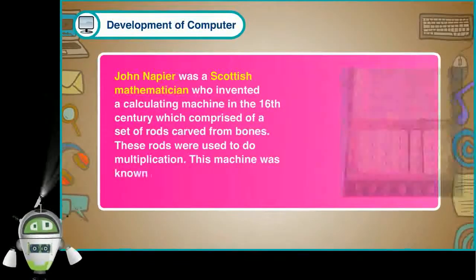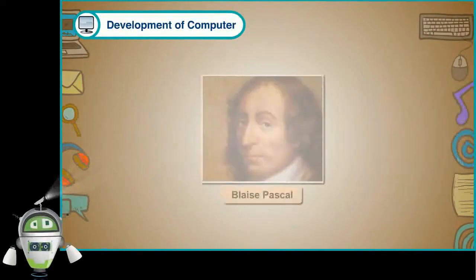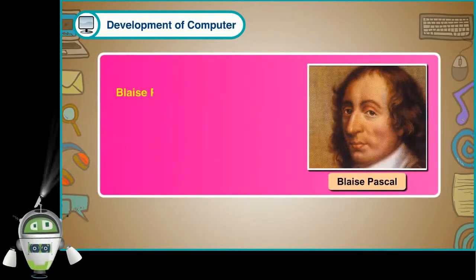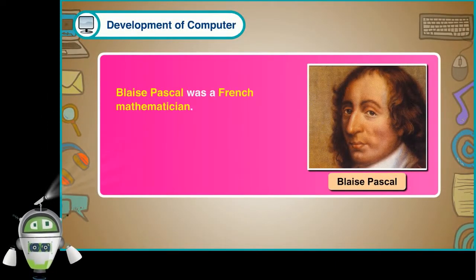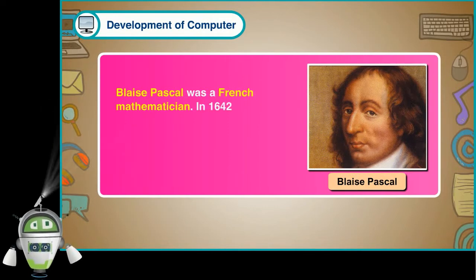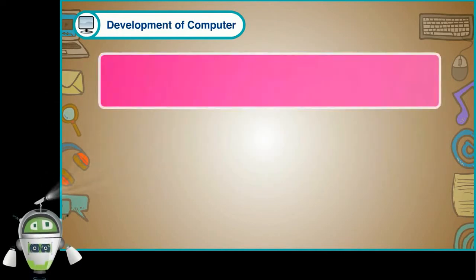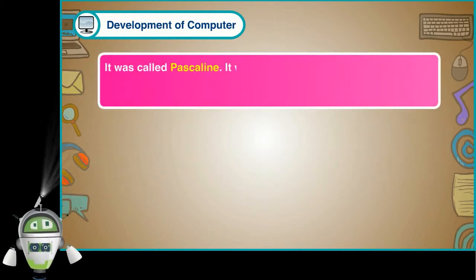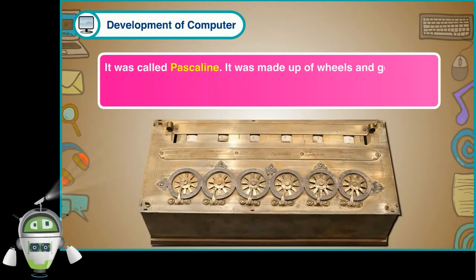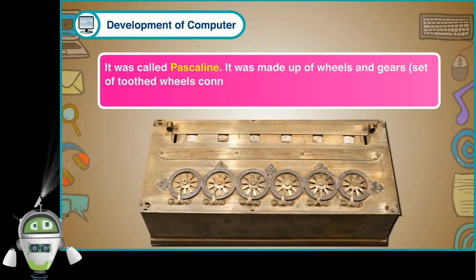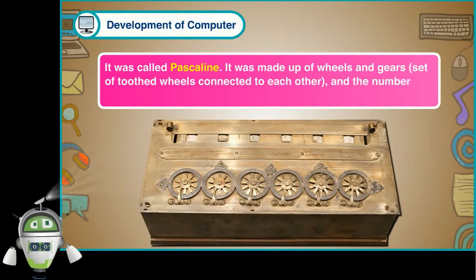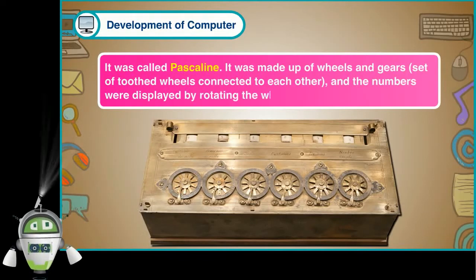Blaise Pascal. Blaise Pascal was a French mathematician. In 1642 CE, he invented a mechanical calculating device which could do addition and subtraction. It was called Pascaline. It was made up of wheels and gears, set of toothed wheels connected to each other. And the numbers were displayed by rotating the wheel.